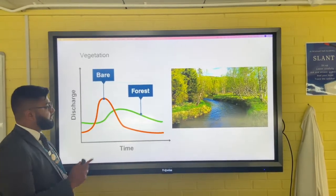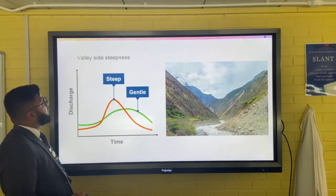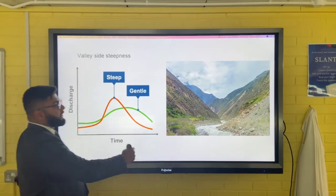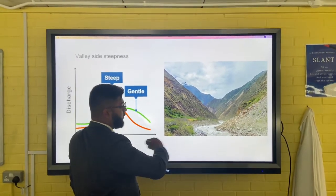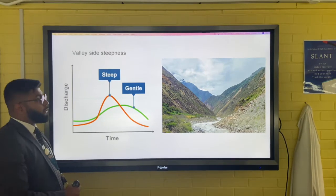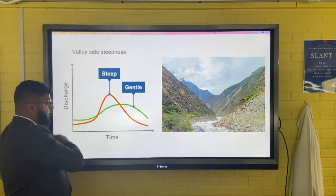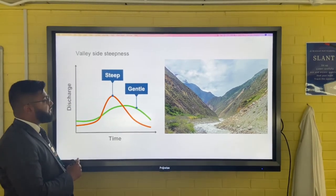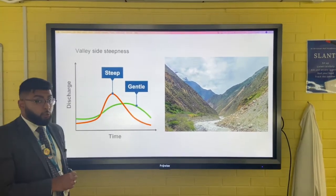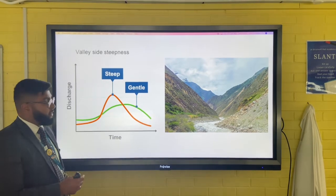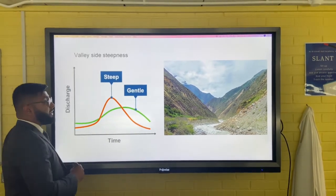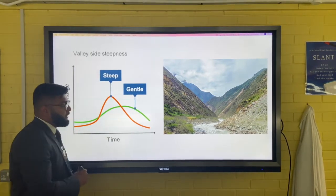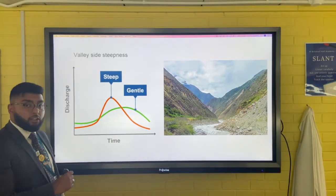Finally, valley side steepness. Having a look at this valley, in terms of rainfall that's going to fall, it'll drain into the river very quickly. So if the valley side steepness is very steep, you have a very high falling limb and steep rising limb, but also a very short lag time - the water getting into the river very quickly. But if we have a gentle valley side steepness, you have a very gentle rising and falling limb and a much longer lag time.